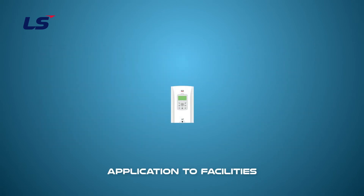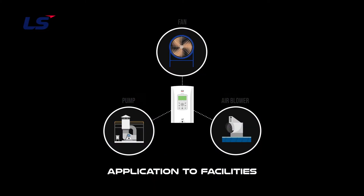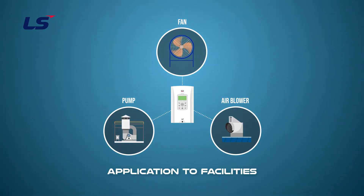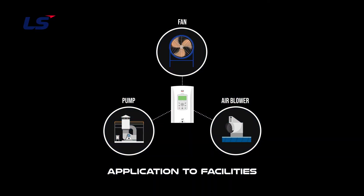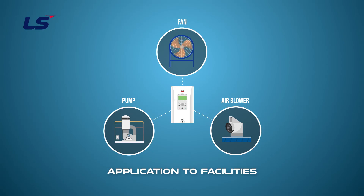The KEB function maintains the DC link voltage by using the regenerative energy generated from the motor when the system with a large load is rotated due to inertia or external environment when the inverter input power is temporarily cut off. It is used to effectively operate the motor by maintaining the DC link voltage and extending the time until a trip occurs. It is mainly used when driving a large fan or pump with a large load, or multiple blowers.